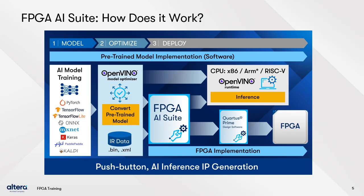The software flow takes the intermediate files from OpenVINO and runs them through the OpenVINO Toolkit Inference Engine to generate the runtime that can be run on an x86, ARM, or RISC-V processor.